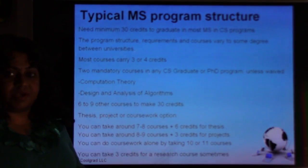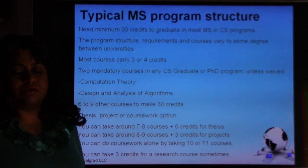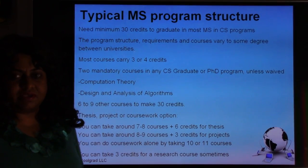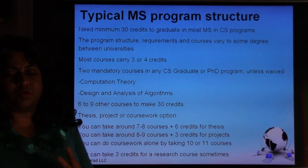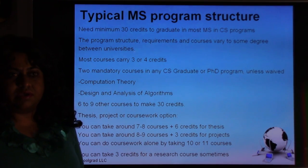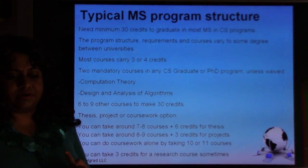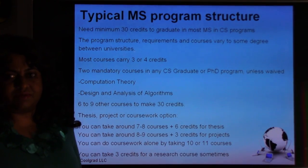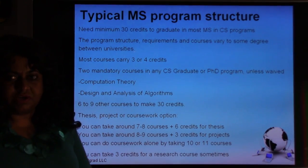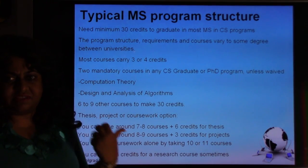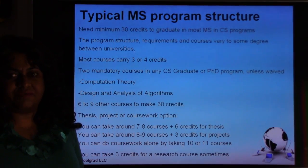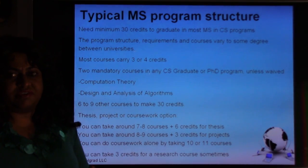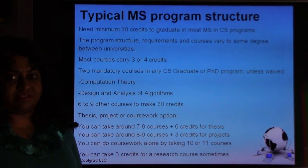If you don't want to take the master's courses, you can take the PhD Qualifier Exams. If you do a PhD in Computer Science at any university, you have to take two qualifier exams and pass them — those are Computation Theory and Algorithms. As a master's student, if you take the PhD qualifier exams in these two subjects and clear them, you get a waiver and can use that time to study something else.